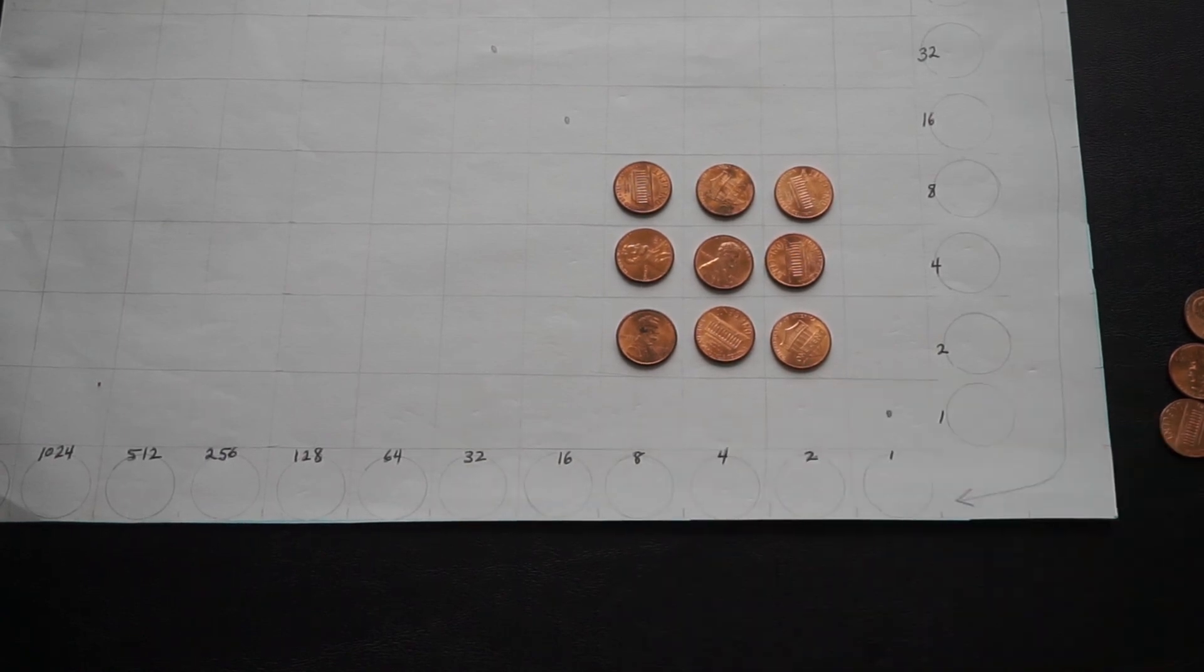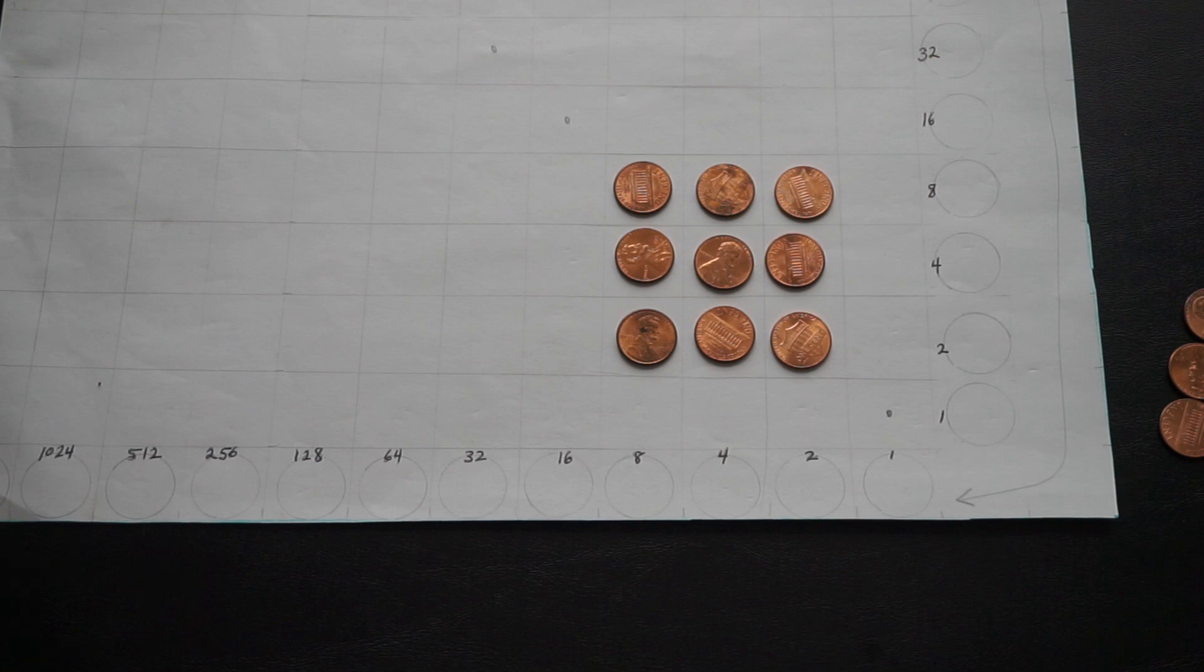Now all of the problems that we've done so far have been perfect squares. But you know that not all numbers are perfect squares. So what happens, for instance, if you want to take the square root of five, or if you want to take the square root of two? So I'm going to create a separate video on that. And for now we'll just leave this with the perfect squares.